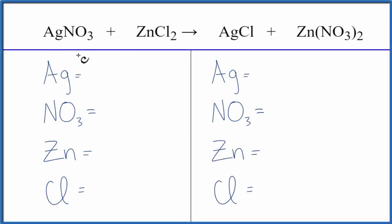In this video we'll balance the equation AgNO3 plus ZnCl2, that's silver nitrate plus zinc chloride.